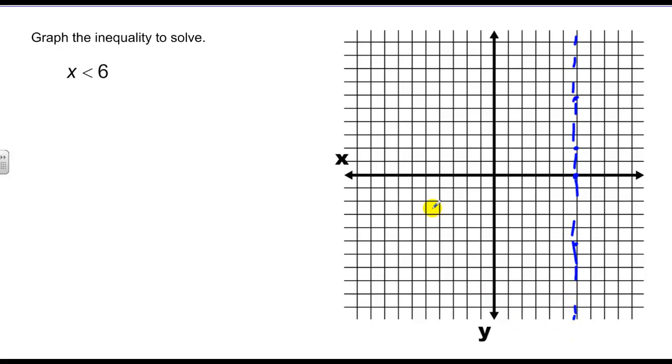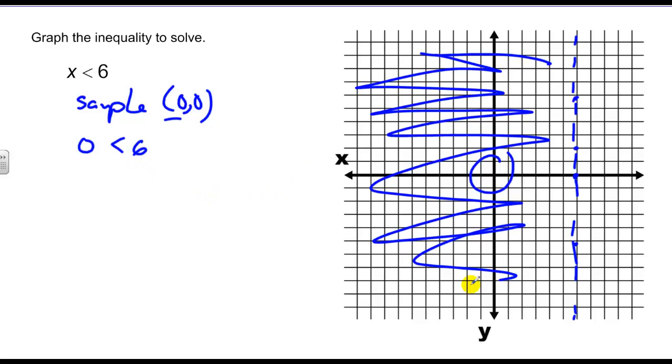And then I have to pick a sample point. I'll pick a sample point once again, zero, zero. But all I have to use in this case is the x value. So I'm asking, is zero, because that's my x value, less than six? So I'm shading everywhere in this direction.